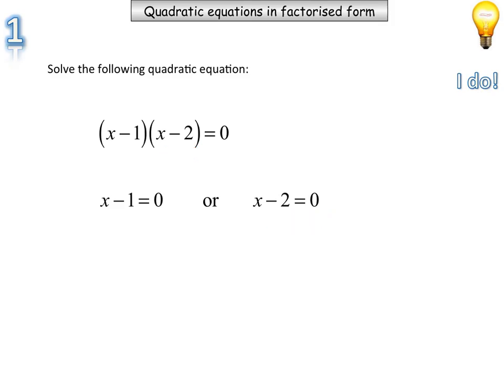Now, we can solve both of these linear equations. Here's a nice simple linear equation. To solve this, add one to both sides. And for this one, we'll add two to both sides of the equation. Adding one here and one there will mean that we have plus one, plus one, x is equal to zero.